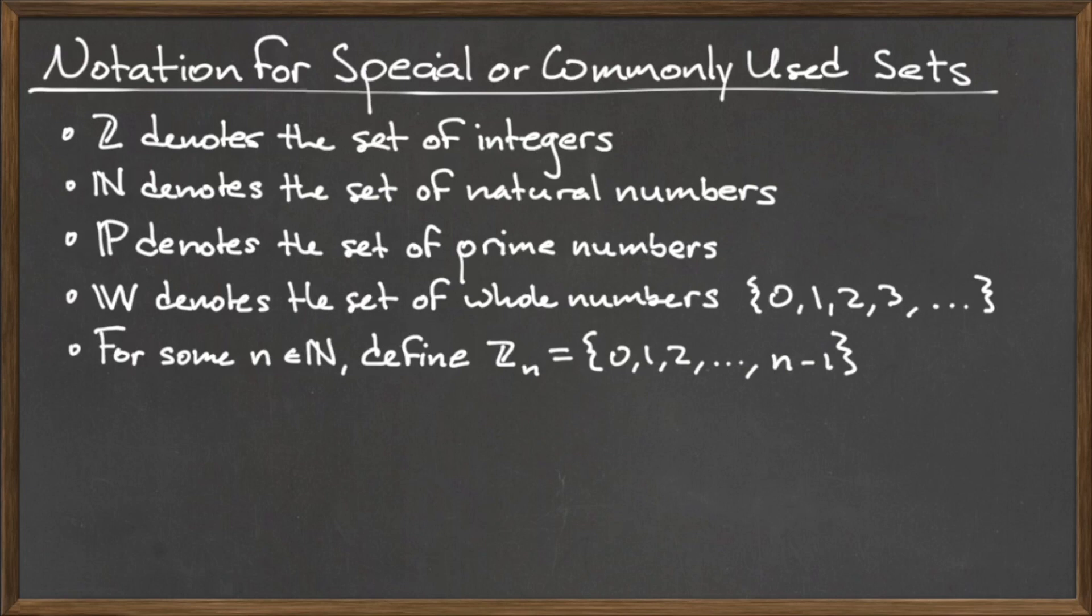For example, Z3 would contain the elements 0, 1, and 2, while Z6 would contain the elements 0, 1, 2, 3, 4, and 5.